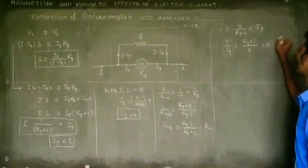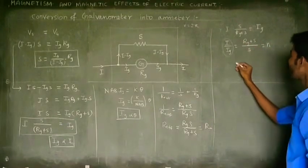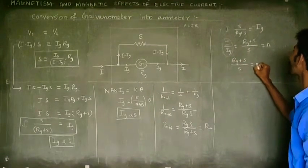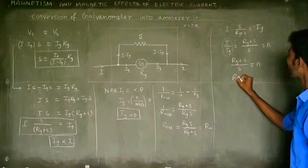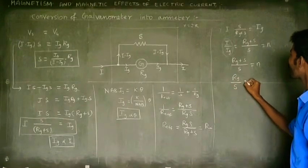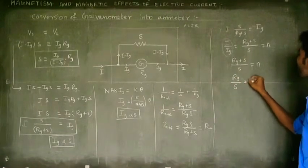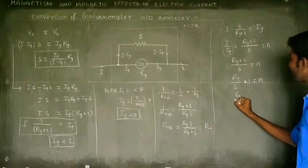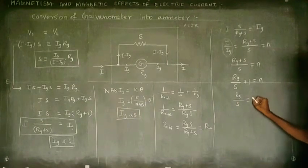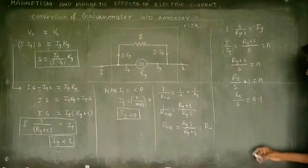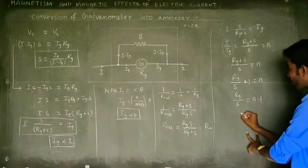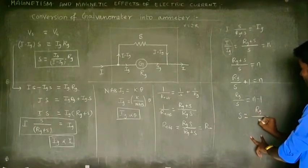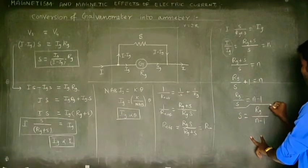N equals (RG plus S) divided by S, which gives RG over S plus 1 equals N, so RG over S equals N minus 1. Therefore, S equals RG divided by (N minus 1). This is the required shunt resistance to increase the range of the galvanometer N times.